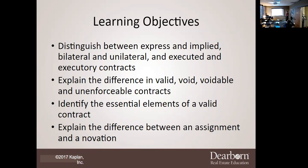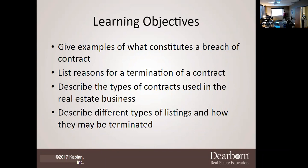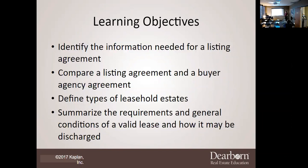We'll also identify the essential elements of a valid contract and explain the difference between an assignment and a novation. We're going to give examples of what constitutes a breach of contract, list reasons for termination of the contract, and describe the types of contracts used in the real estate business, as well as describe the different types of listings and how they may be terminated.